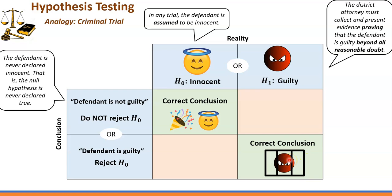However, there are two other possible outcomes. If the defendant is declared to be guilty but in reality the person is innocent, that's what we call a Type 1 error. In other words, H0 is true, but based on the evidence we concluded that we have to reject H0 — innocent person is declared guilty.